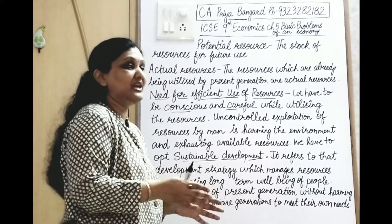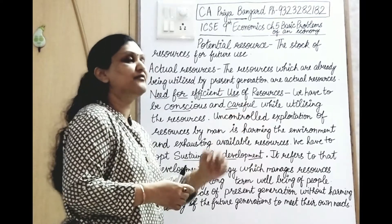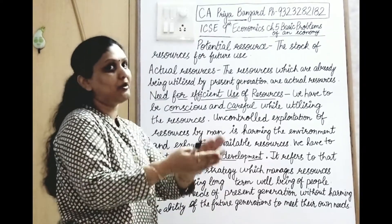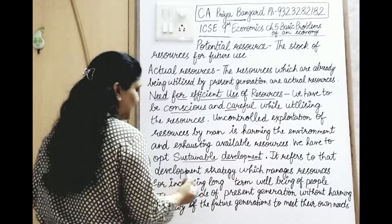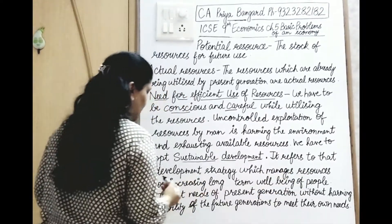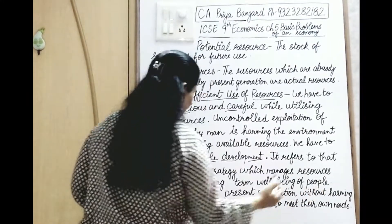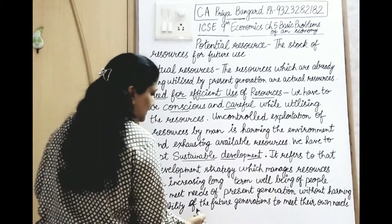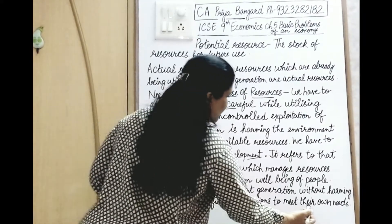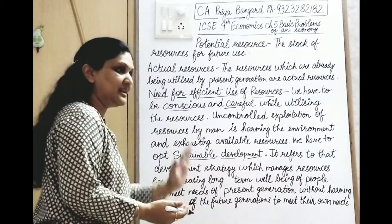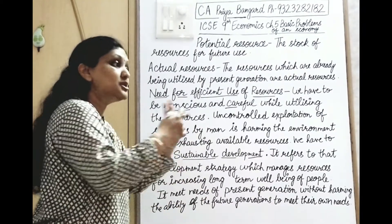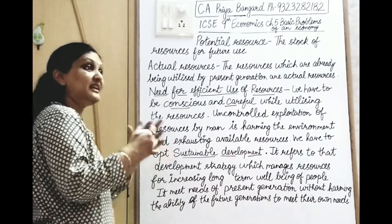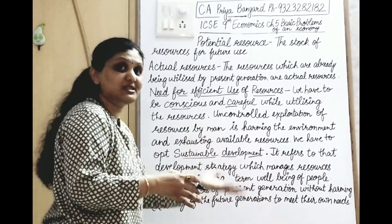We have to think about the long-term well-being of people, not just the present. Sustainable development meets the needs of the present generation without harming the ability of future generations to meet their own needs. You are meeting present needs, but also keeping resources for future generations — not harming those generations so that they are still able to meet their needs.